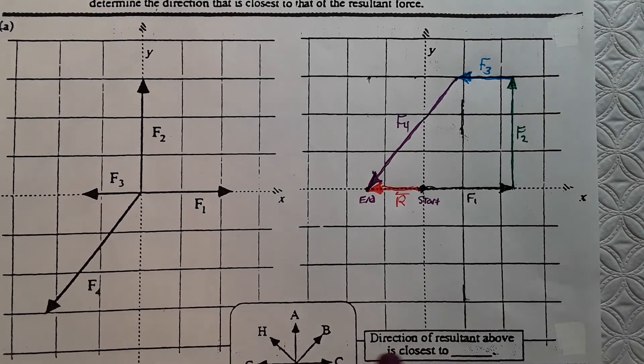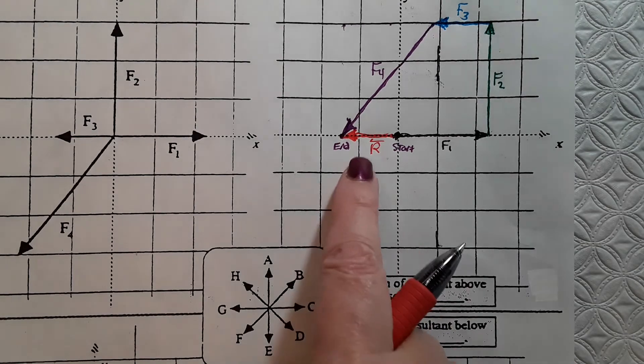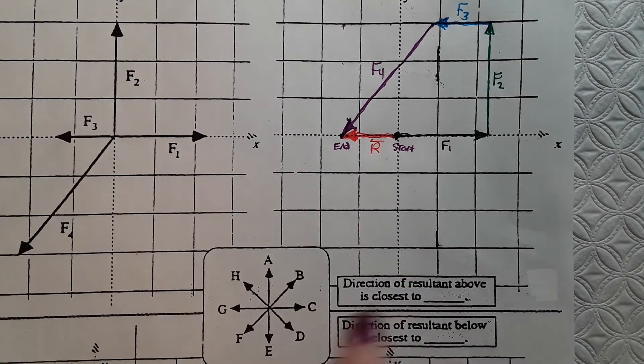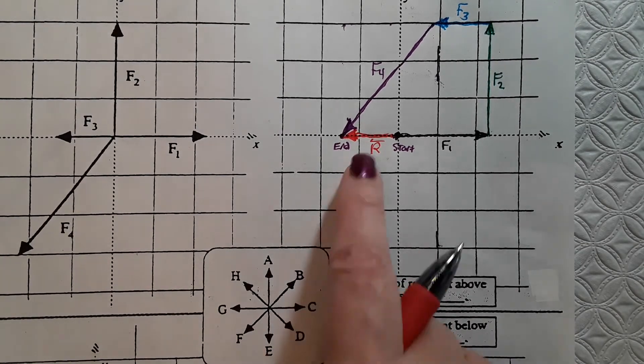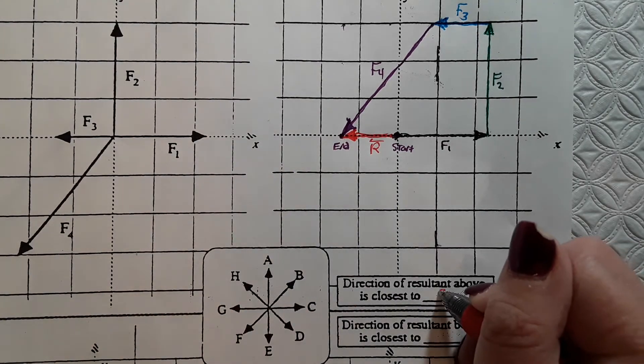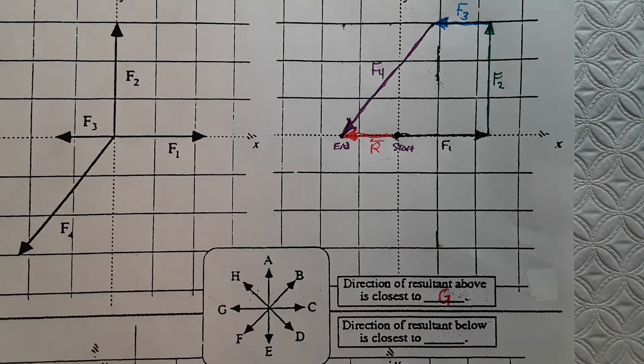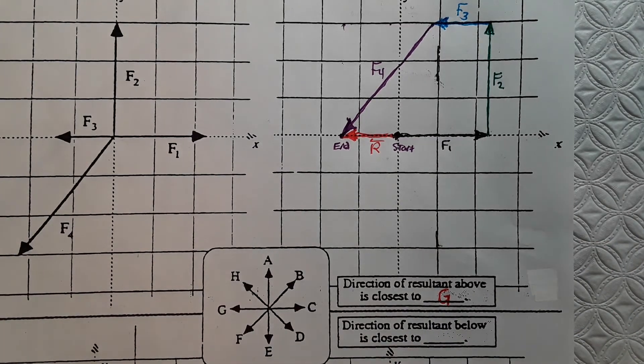Now, down here in the middle, there's a little question here. It says, direction of resultant above is closest to, and here's the key. Well, it points directly to the left, and directly to the left is G. So, the answer for the direction of the resultant is G. And you've got one of those little questions for each problem.